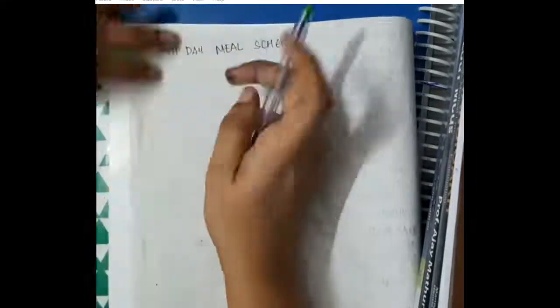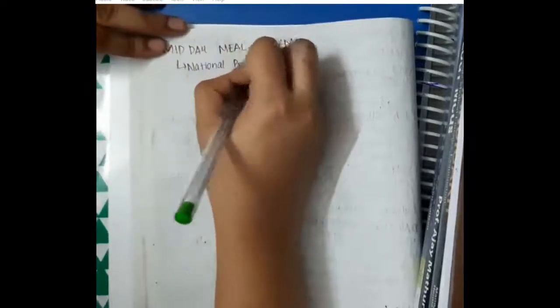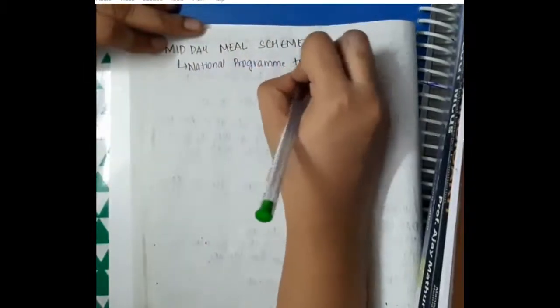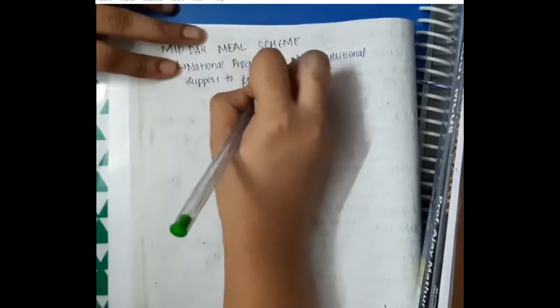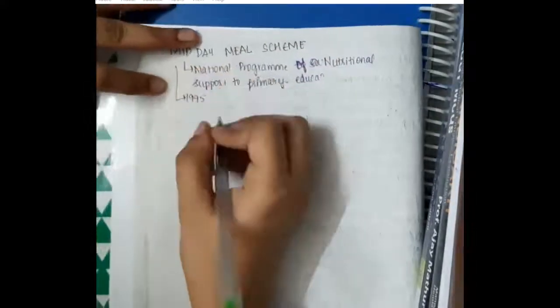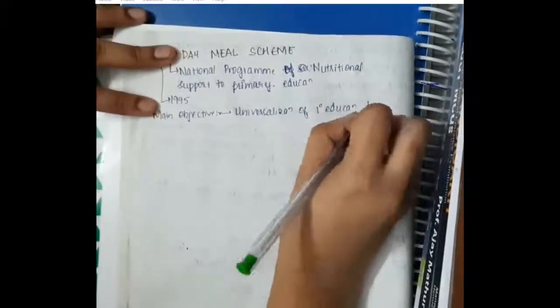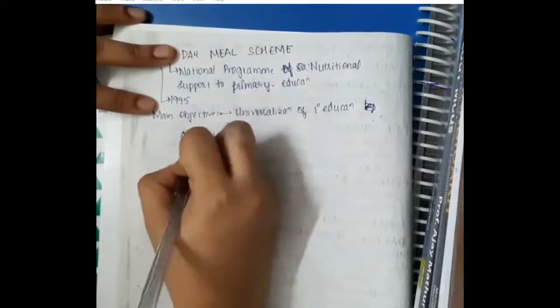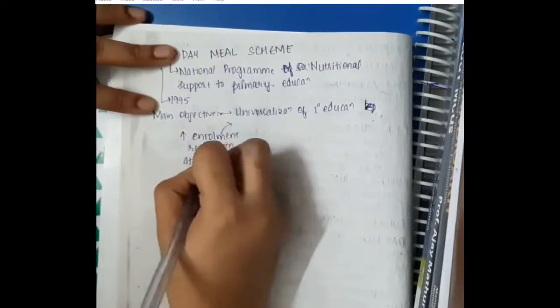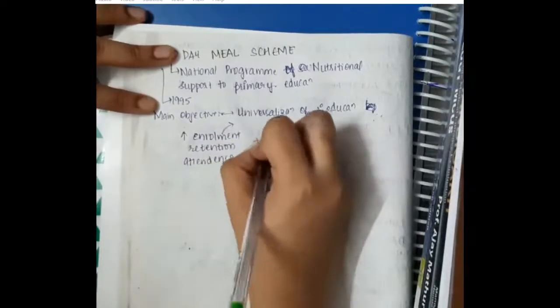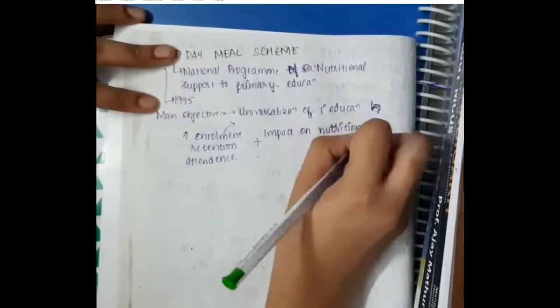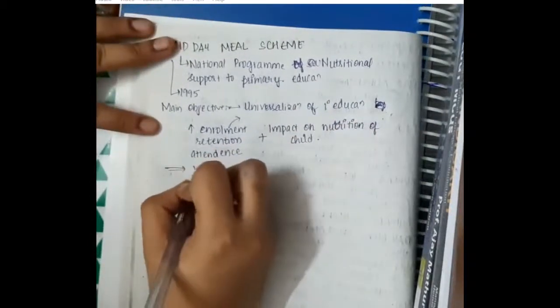Recently, this Midday Meal Program has been supplemented with the Midday Meal Scheme, which is a National Program for Nutritional Support to Primary Education put forward in 1995. The main objective is universalization of primary education. We have to increase the enrollment, retention, and attendance of children into schools, and it is also important to provide nutrition to the child.